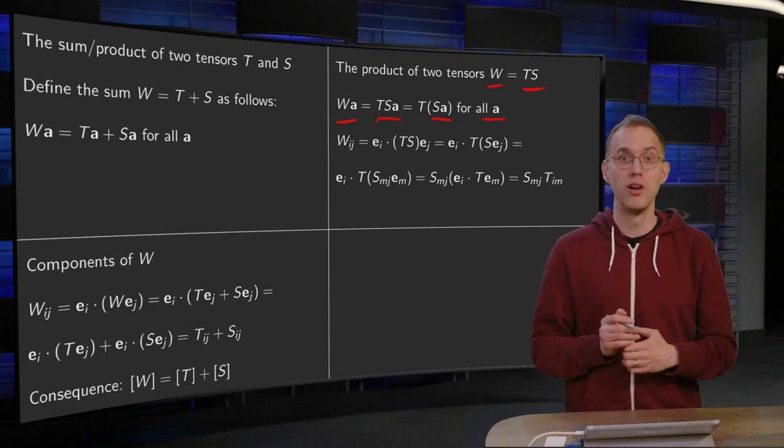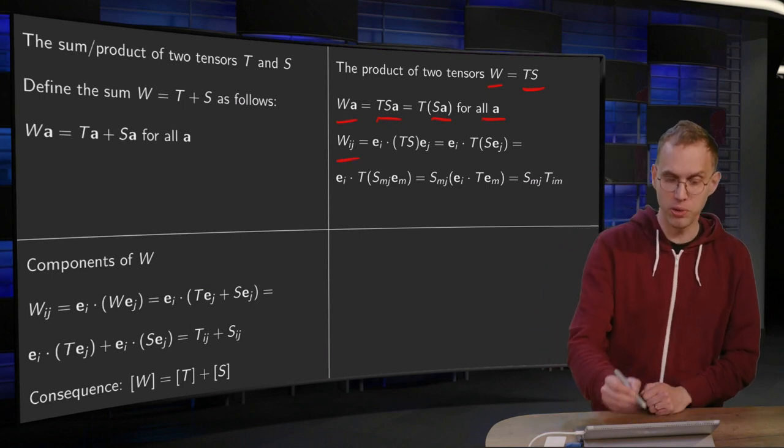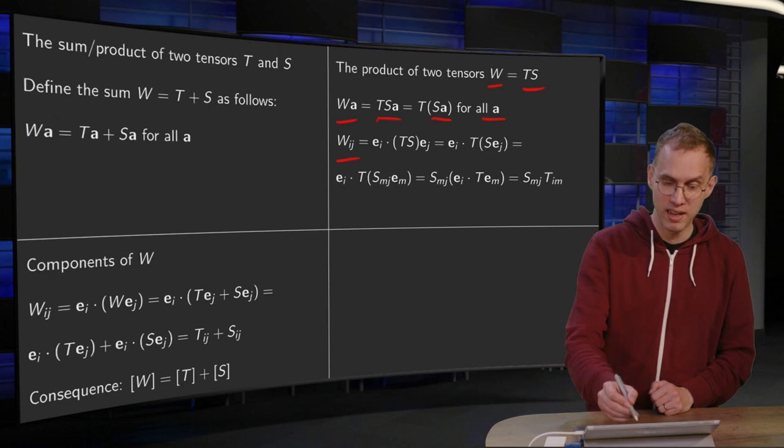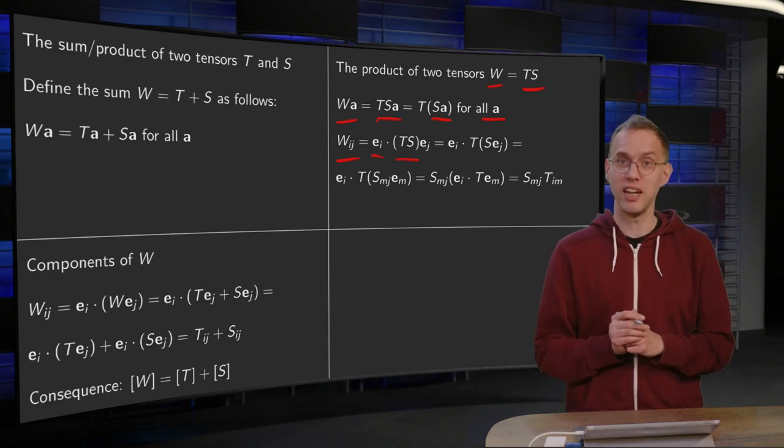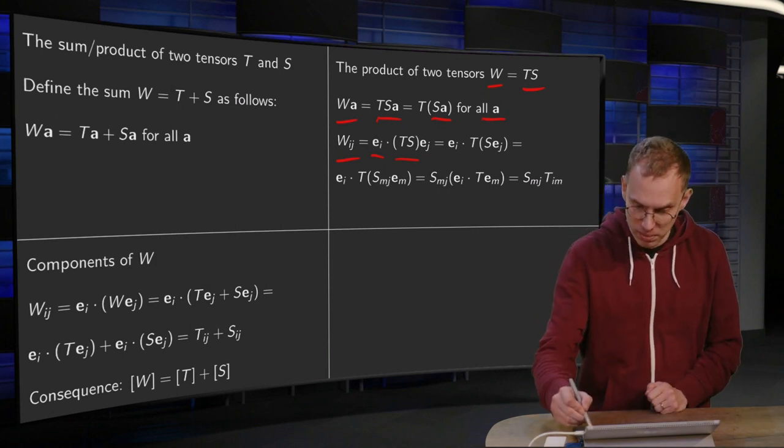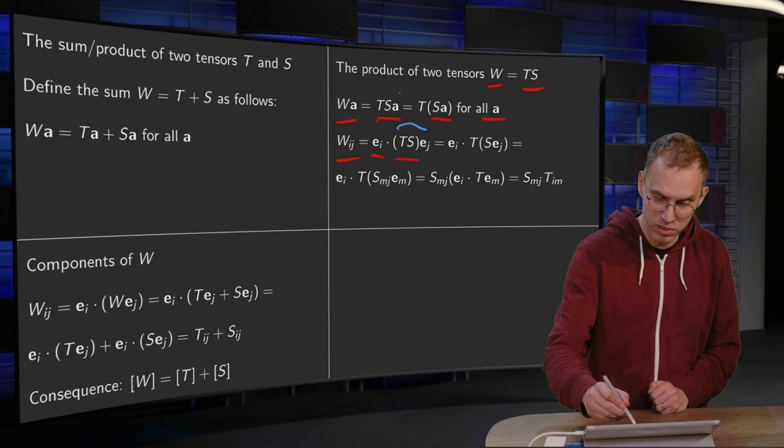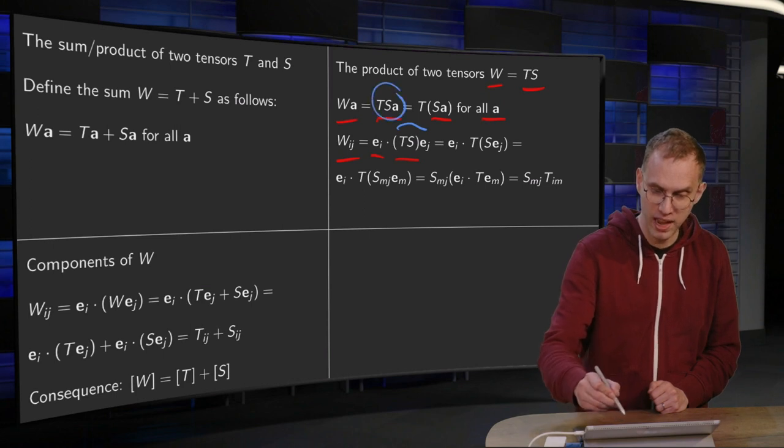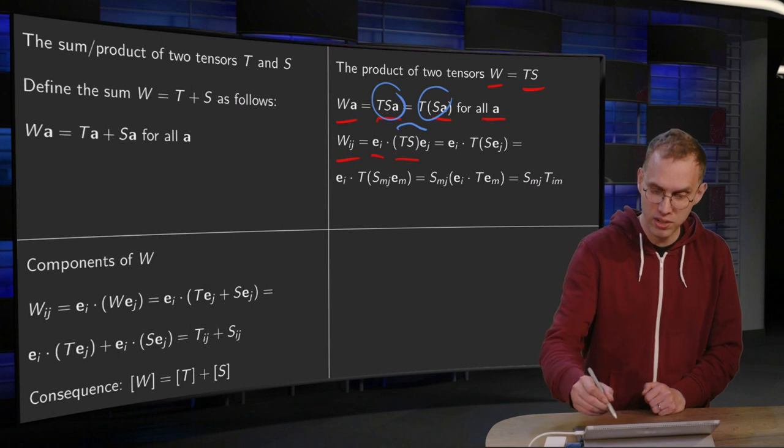Then again, same question. What about the components? For the W_IJ, same formula again. E_i inner product TS, e_j. Very useful formula, use it all the time. And by definition, we need the TS working on e_j. For that we use this formula. TS working on some A equals the T of the S working on this A. So this yields the T working on the S of e_j.